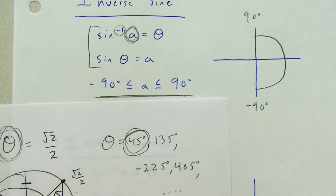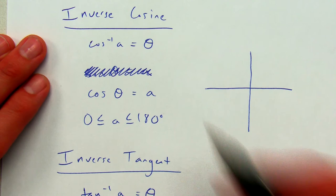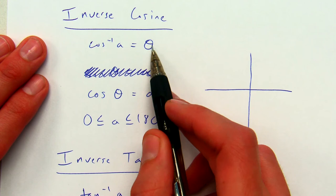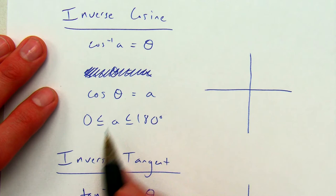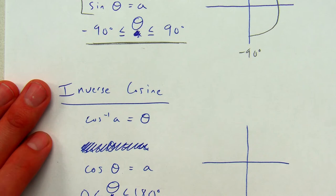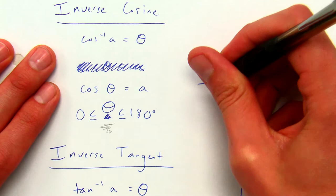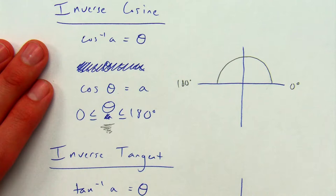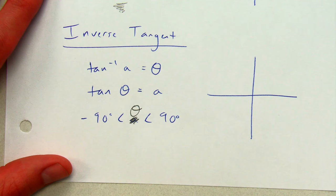Inverse cosine is written cos⁻¹. Saying inverse cosine of a equals theta is the same as saying cosine of theta equals a. For inverse cosine, the output angle theta must be between 0° and 180°. Inverse tangent is written tan⁻¹. Saying inverse tangent of a equals theta is the same as saying tangent of theta equals a. For inverse tangent, the output angle theta must also be between −90° and +90°.